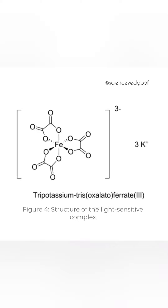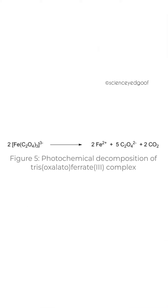Violet and ultraviolet portions of the light spectrum have sufficiently high energy to excite the tris complex. That excited complex is unstable and undergoes an internal redox reaction. The central iron(III) atom, as an oxidizing agent, oxidizes the nearby oxalate anion, which becomes two carbon dioxides.